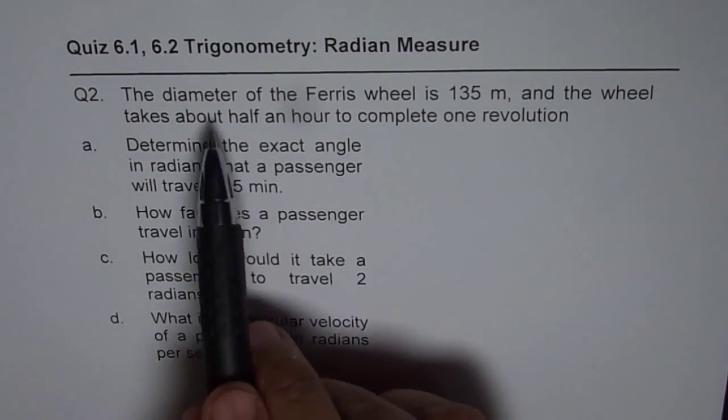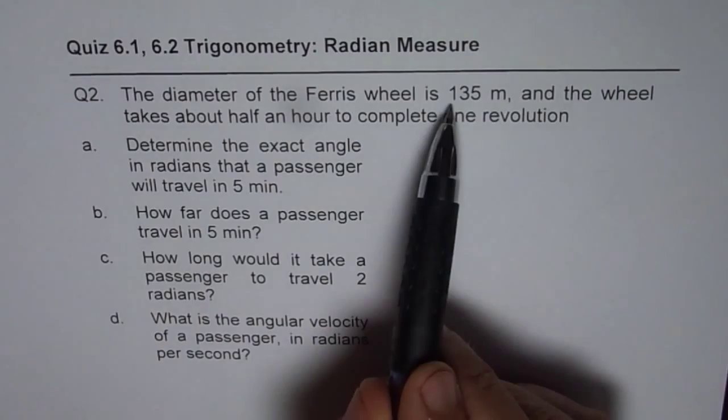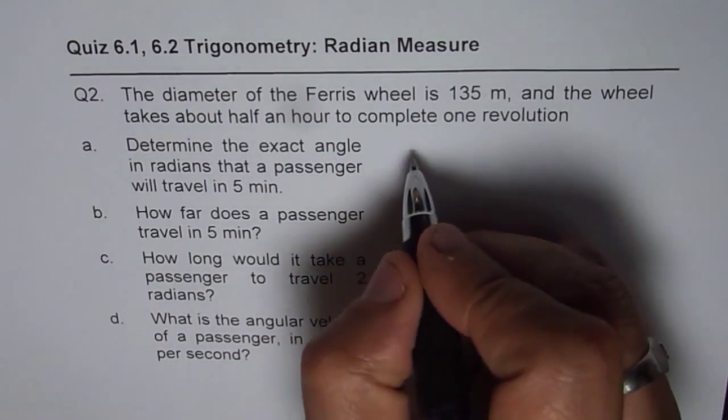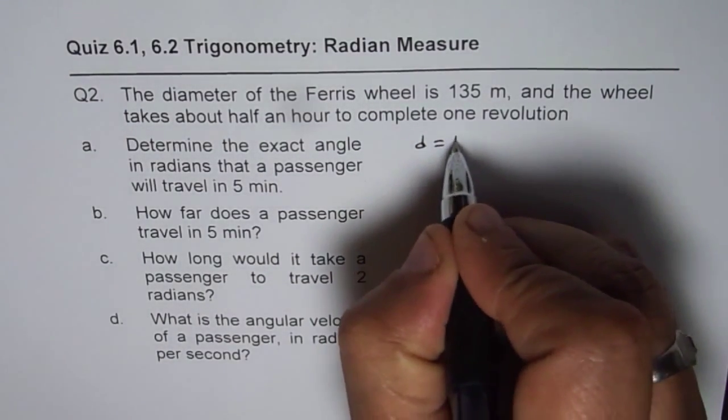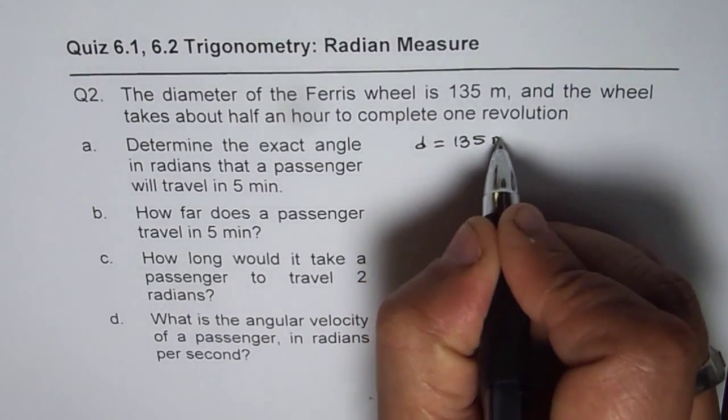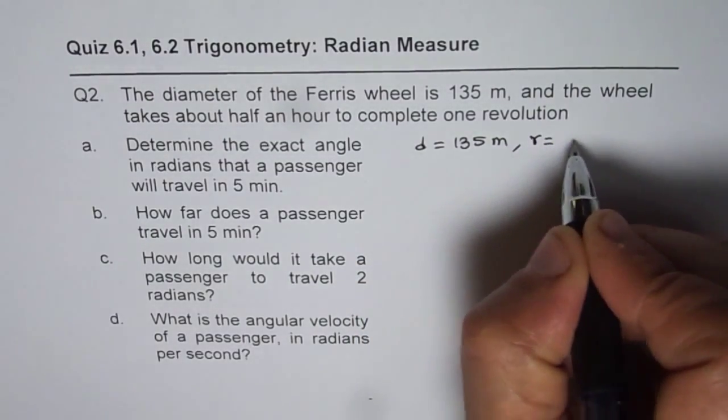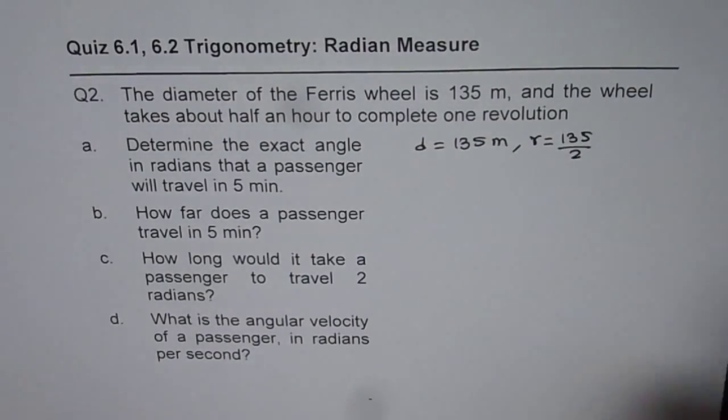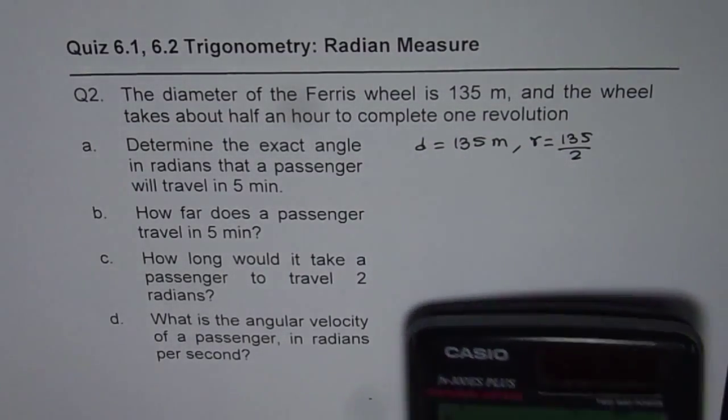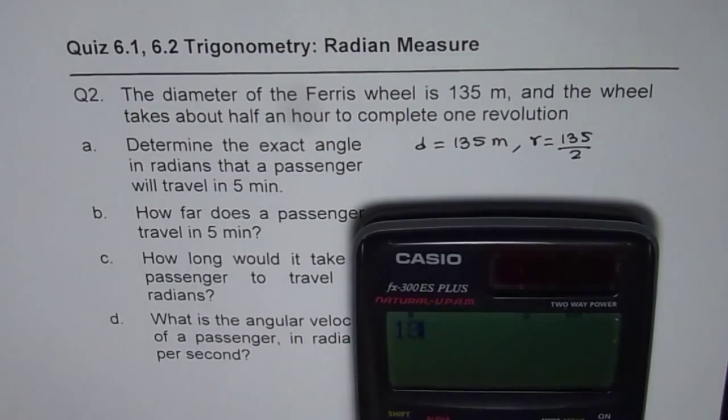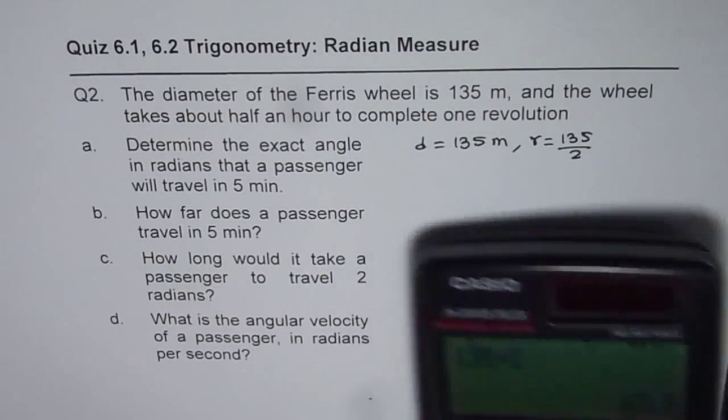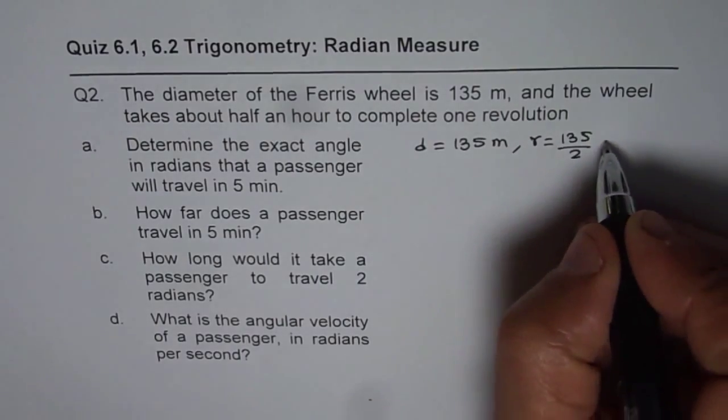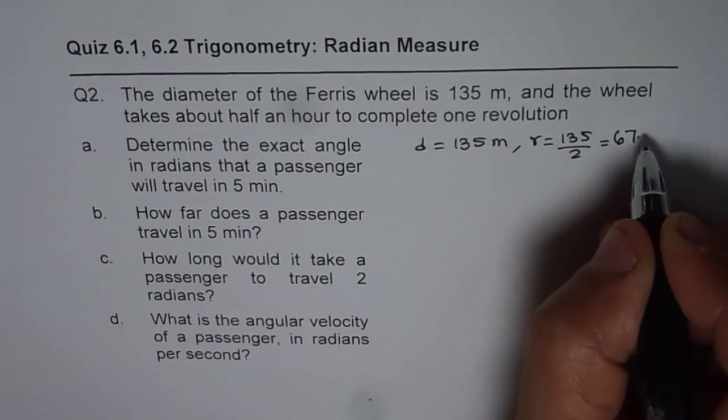Now we are given that the diameter of the Ferris wheel is 135 meters. So diameter is 135 meters, that means radius is 135 divided by 2, which is 67.5 meters.